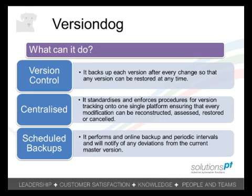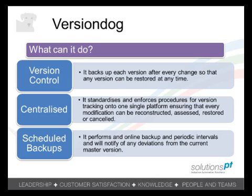VersionDog is specifically designed for the automation industry. It allows version control so that every change can be captured and restored easily. With its server-client architecture, the versions can be stored centrally, meaning that you know exactly where your version is and enforcing good version control practices.